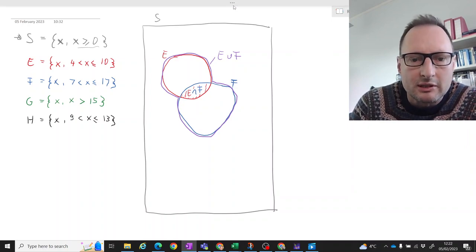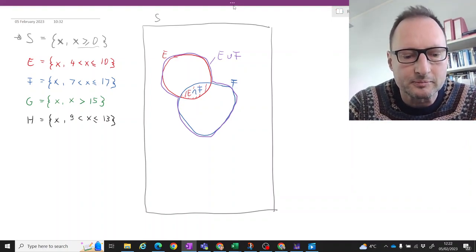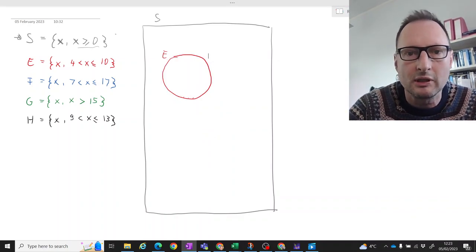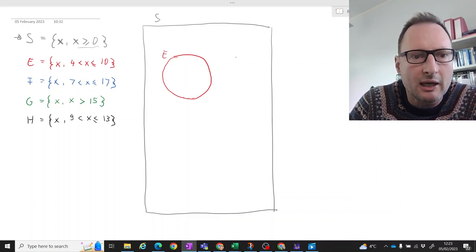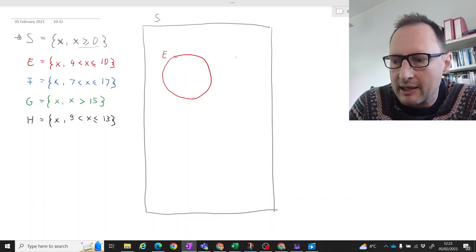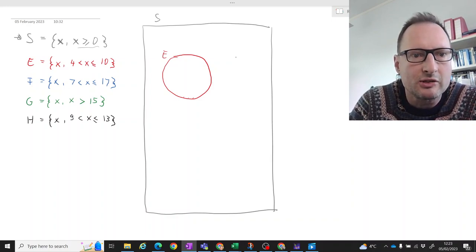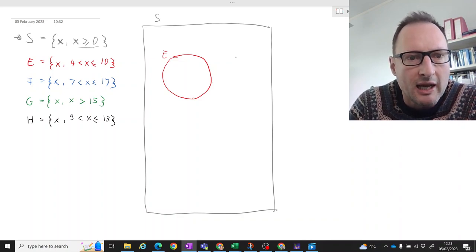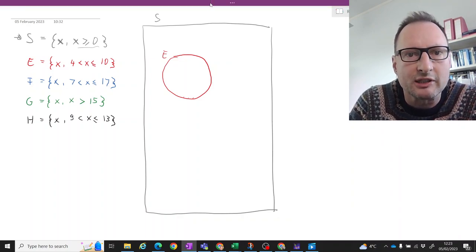Okay, so we've explained union and intersection. Let me just clean something here. So here we now have E again. And let's think about E and a different event G. Okay, so E is all the numbers between 4 and 10, not including 4. And G is all the numbers larger than 15.